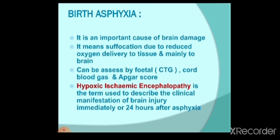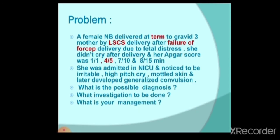Now we can look at our first problem. A female newborn delivered at term to a multigravida mother by lower segment caesarean section after failure of forceps delivery due to fetal distress. The baby did not cry after delivery. The APGAR score was 1 at 1 minute, 4 at 5 minutes, 7 at 10 minutes, and 8 at 15 minutes. Achieving a score of 8 is good, but it should be reached by at least 5 minutes. If the score of 8 is only achieved after 10 or 15 minutes, this indicates problems with breathing or asphyxia.